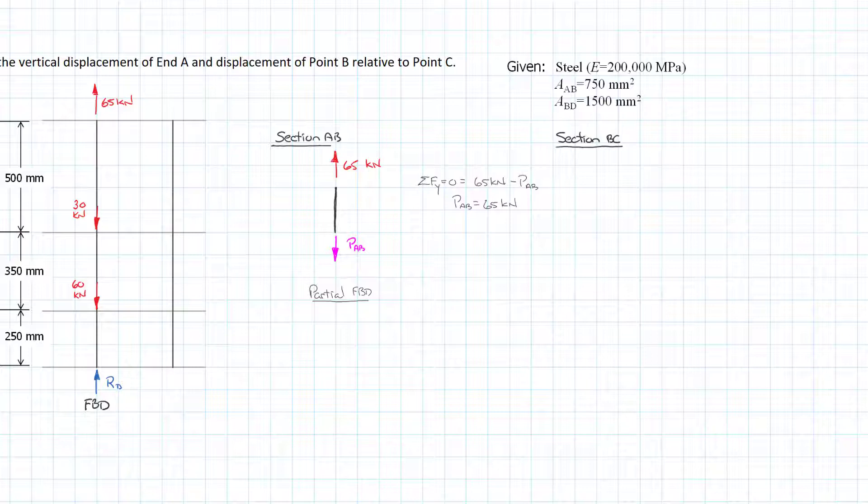We'll do our partial free body diagram, it's going to get a little bit longer in this case. With the partial free body diagram you're throwing everything away from one side or the other. We're throwing away the bottom half because we have that unknown reaction at D and we don't want to deal with it. We have our 65 kilonewtons still at the top, we have our 30 kilonewtons partway down.